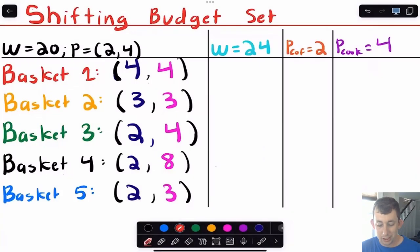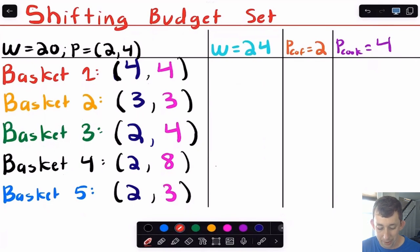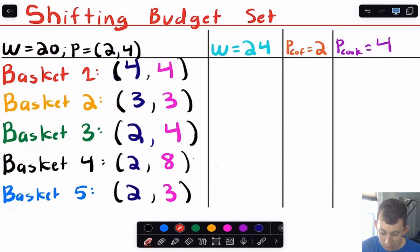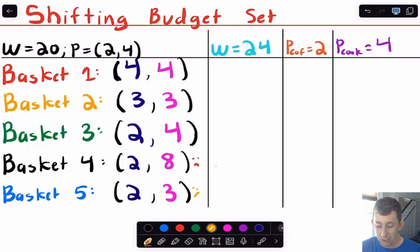Now let's get into the fun stuff — shifting the budget constraint. Here are five baskets, including the three from before plus two additional ones chosen to make sense on the graph. At original prices and wealth, basket one was not affordable, basket two was affordable but not on the constraint, and basket three was on the budget constraint. Basket four, spending $4 on cookies but $32 on mugs, is not affordable. Basket five, spending $4 on cookies and $12 on mugs, is in the budget set.